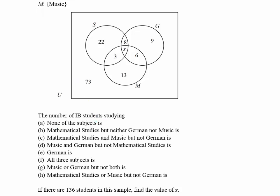We want to find the number of IB students studying none of these subjects — that's outside the circles — and in this case it's 73. Next, students studying Mathematical Studies but not German or music: the answer is 22. Then Mathematical Studies and Music — that intersection — is 3, but not German, so the answer is only 3.